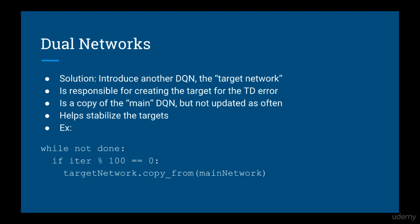The solution to this is to introduce another deep queue network. We call this the target network, and as you might suspect, this network will be responsible for creating the TD target. The target network is essentially a copy of the main queue network, but it isn't updated as often. So for example, you might make the target network constant for 100 time steps while continuing to update the deep queue network. Only every 100 steps, you'll copy the parameters of the main deep queue network into the target network. This helps stabilize the targets.